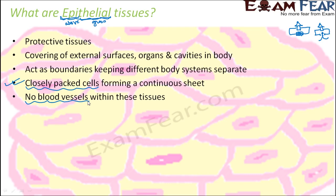How do we know that epithelial tissues do not have blood vessels? Look at your hand. What happens if you hit the wall a little hard, or press your hand hard — does it start bleeding? No. Why? Because the uppermost layer of our skin is basically epithelial tissue, and those epithelial tissues do not have blood vessels. It starts bleeding only when something goes deep inside, piercing beyond the skin surface into deeper tissue layers where blood vessels are present. So that is how we know epithelial tissues do not have blood vessels.